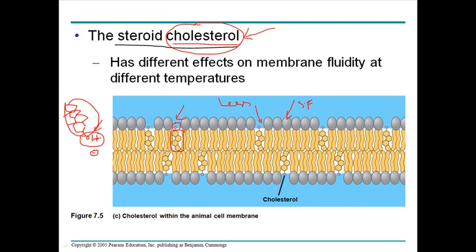The role of cholesterol depends on the organism's environment. In cold environments like the Arctic, penguins need tightly packed cell membranes, and cholesterol helps stack the membrane into a viscous or crystalline state. In contrast, organisms living in hot environments such as deserts require a more fluid membrane, and cholesterol there acts to separate the phospholipids, maintaining a liquid state. This demonstrates the importance of cholesterol in adapting membrane fluidity to environmental conditions.